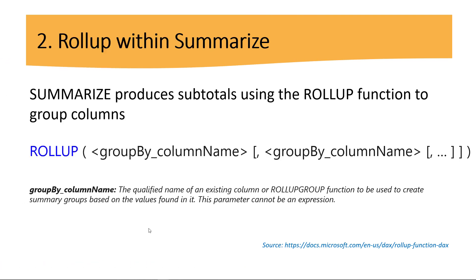ROLLUP within SUMMARIZE. SUMMARIZE produces subtotals using the ROLLUP function to group columns. The syntax has just one part: the group by column name. This is the qualified name of an existing column or ROLLUP group function, used to create summary groups based on the values found in it. Please keep this information in mind.